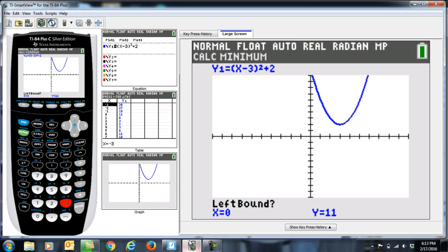We're going to have to follow some steps. Down here on the bottom it says left bound. It is asking you, where is the left-hand side of the vertex? We're going to move the cursor to the right until it shows up on our screen, close to the left-hand side of the vertex. That's the left side, so I'm going to hit enter.